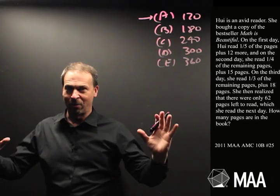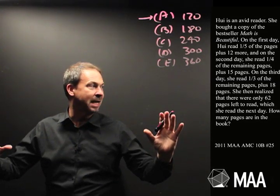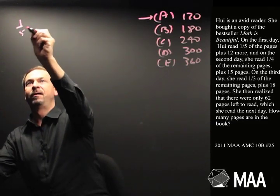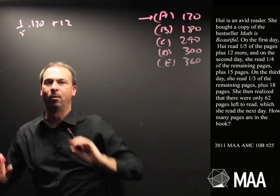Does the number 120 work out for the mathematics of this problem? Well, let's find out. So, if there are 120 pages in the book, what goes on? On day one, she reads 1 fifth of the pages plus 12 more. So she reads 1 fifth of 120 plus 12 more.